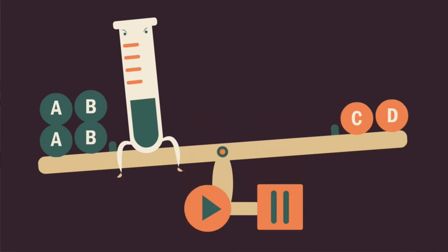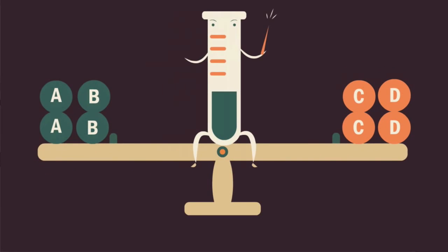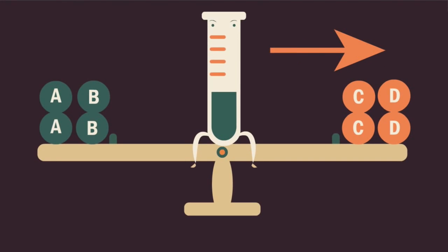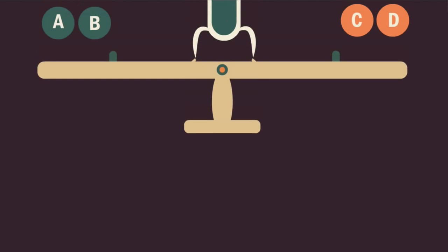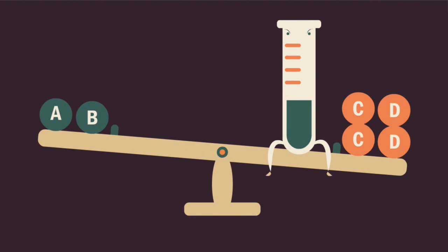The system is now stressed and no longer at equilibrium. To counteract the stress, more C and D are produced, so equilibrium shifts to the right. When concentration increases, equilibrium shifts to the opposite side of the reaction.